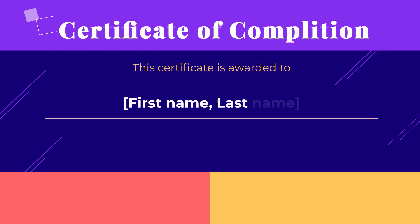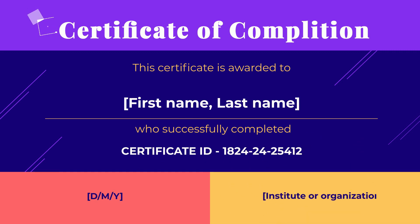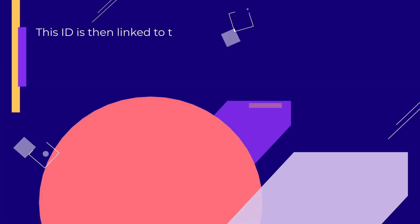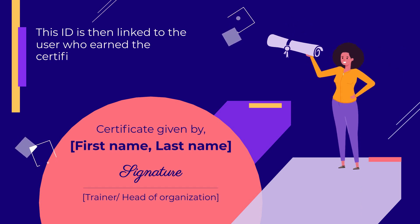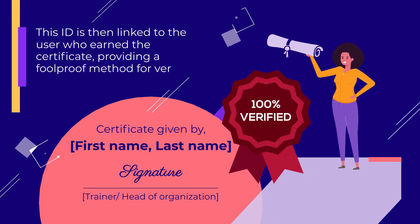Unique ID Creation and Association: The plugin automatically generates a unique ID for each certificate issued to users. This ID is then linked to the user who earned the certificate, providing a foolproof method for verifying the authenticity of their achievement.